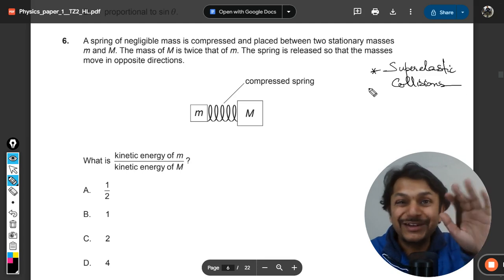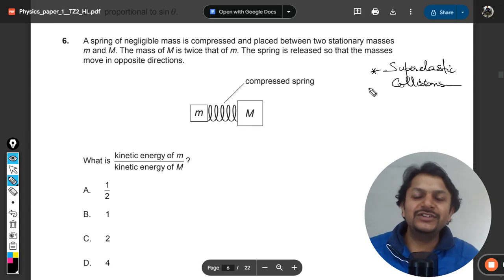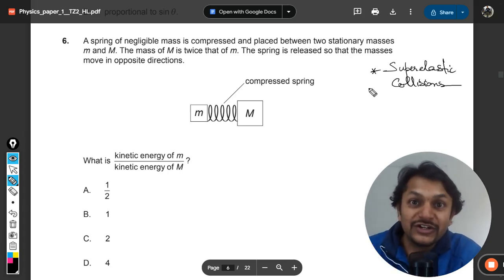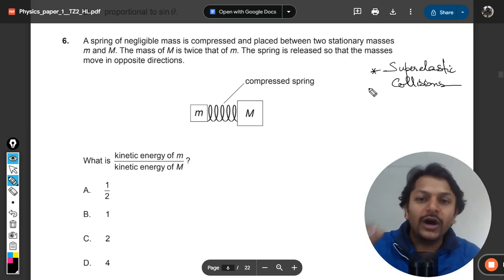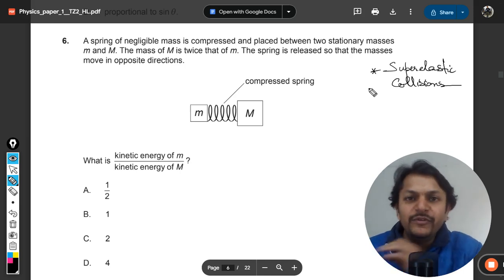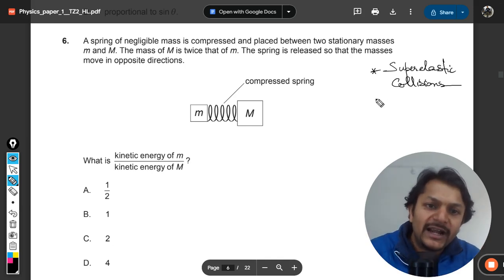There is no collision here but still it is known as super elastic collision. Elastic collision is in which energy is conserved, inelastic collision is in which energy is lost. Super elastic collision is in which energy is created. Before we release it, the total energy is zero, but after that kinetic energy of the masses is created from somewhere. That is why it is known as super elastic collision, and this can also be compared with the case of explosion.